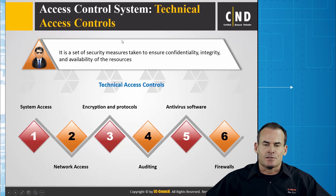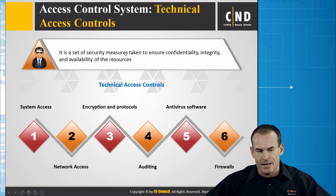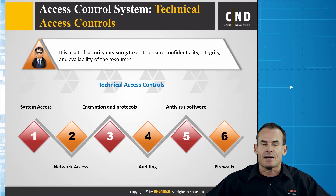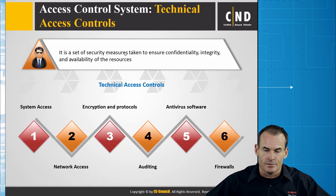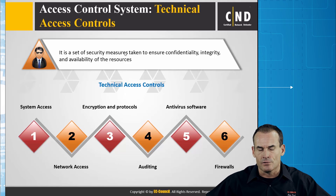Technical access controls are things that are implemented technically: system access, authentication, network access, ACLs, encryption and protocols, auditing, antivirus software, and firewalls — all examples of technical access controls.